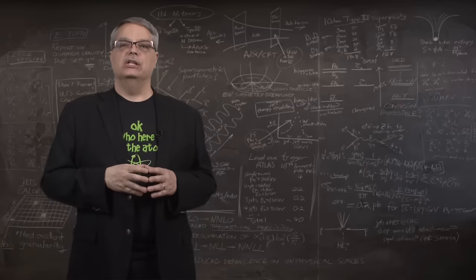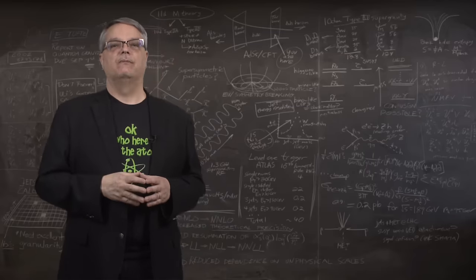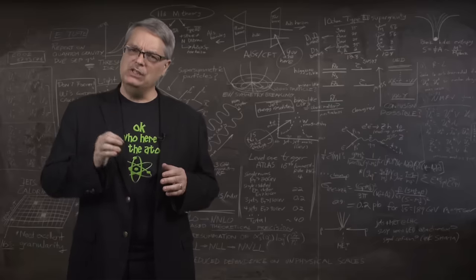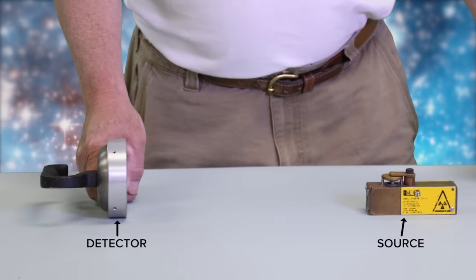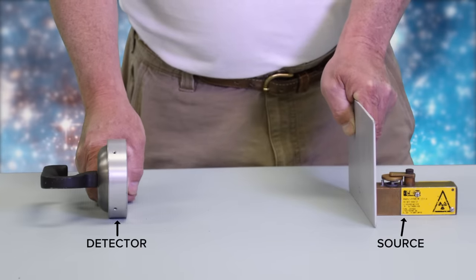Beta radiation consists of light and fast moving particles with electric charge. This means that they can be stopped by reasonably thin plates of material. For instance, we see here that they can be stopped by a thin metal plate.